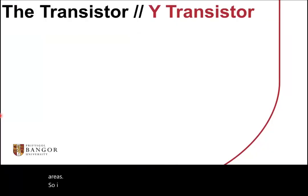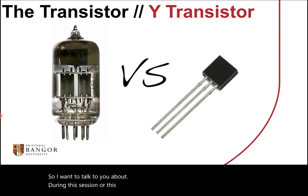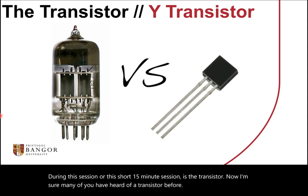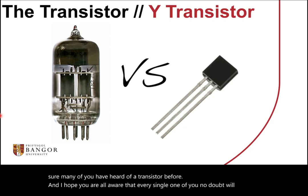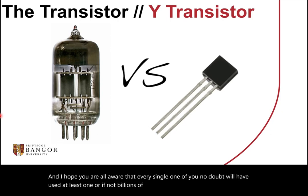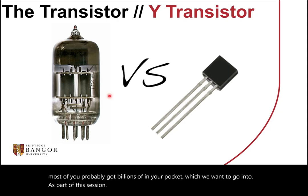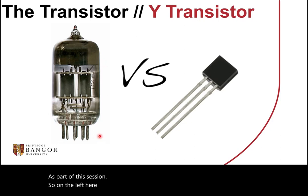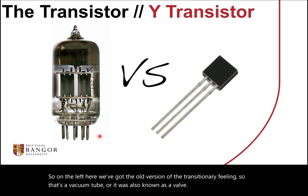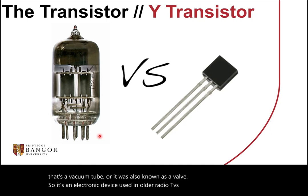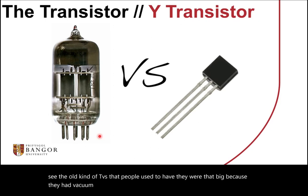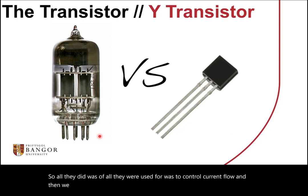What I want to talk to you about during this short 15-minute session is the transistor. I'm sure many of you have heard of a transistor before, and I hope you're all aware that every single one of you will have used at least one, if not billions of transistors today — most of you probably have billions within your pocket. On the left here we've got the old version: a vacuum tube, also known as a valve, an electronic device used in older radios, TVs, and amplifiers, used to control current flow as a switch or amplifier.